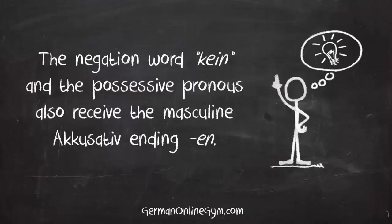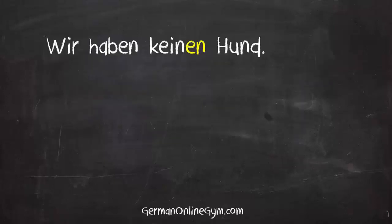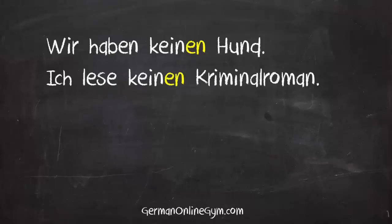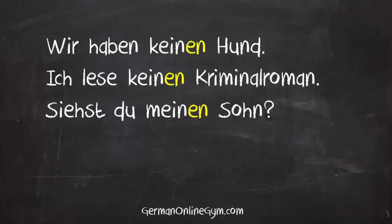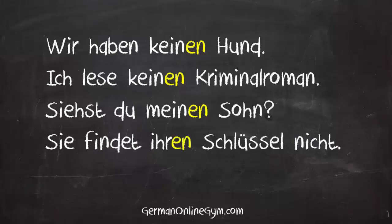In addition, the negation word kein, used to negate nouns, and the possessive pronouns also receive the masculine accusative ending -n. Wir haben keinen Hund — we don't have a dog. Ich lese keinen Kriminalroman — I don't read a crime novel. Siehst du meinen Sohn? — Do you see my son? Sie findet ihren Schlüssel nicht — she doesn't find her key.